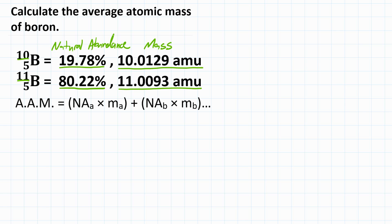We have everything we need to plug in our equation for average atomic mass, where we will multiply the natural abundance times the mass of each isotope, and add all those values together.